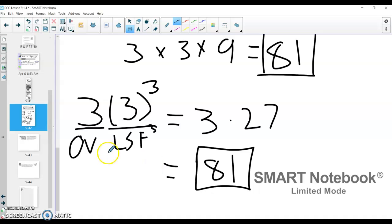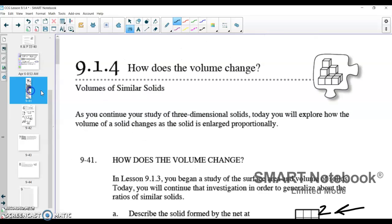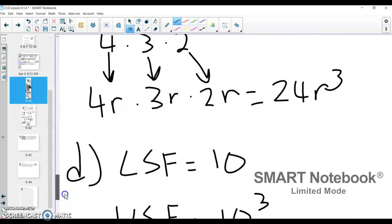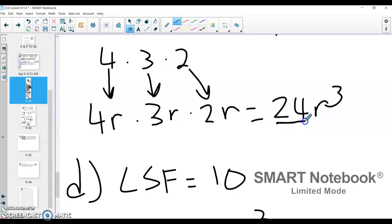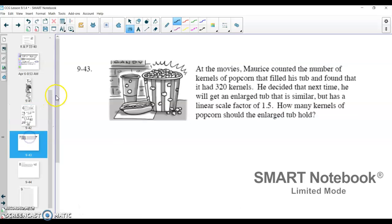All right. Pretty good problem there. I really like that second strategy there. And it reminds me of when we did this at the end with R. We took our original here, 24, multiplied it by our linear scale factor cubed. Okay. Last problem here. And so at the movies, Maurice counted the number of kernels of popcorn that filled his tub. So he counted that there was 320 kernels that fill up his tub of popcorn. He decided next time that he wants to get an enlarged tub that is similar, but has a linear scale factor of 1.5.